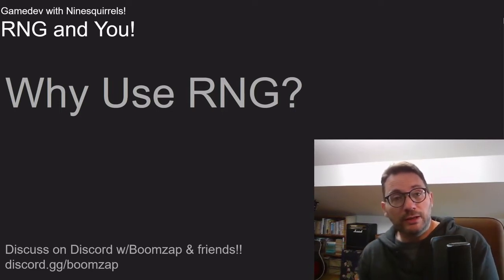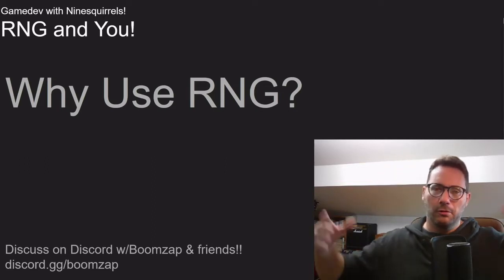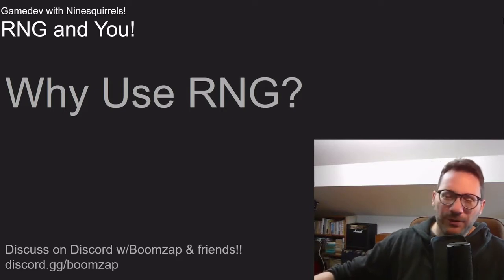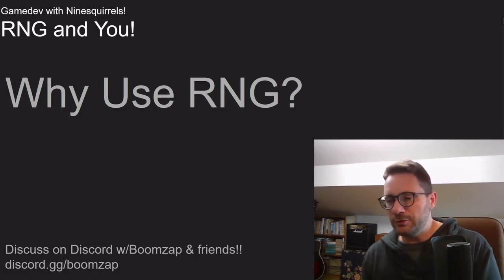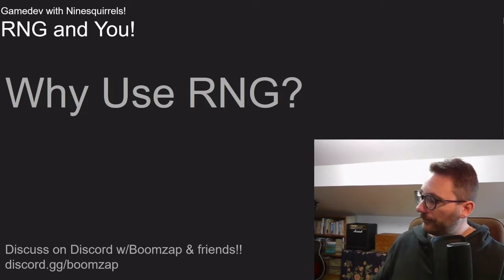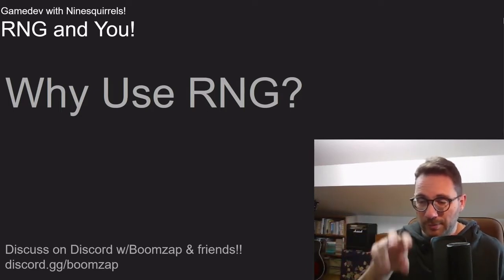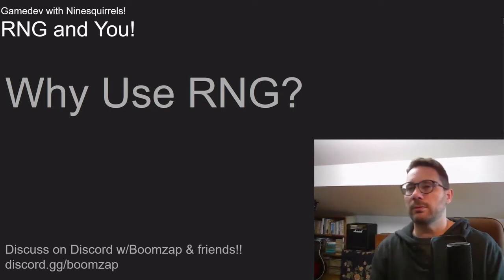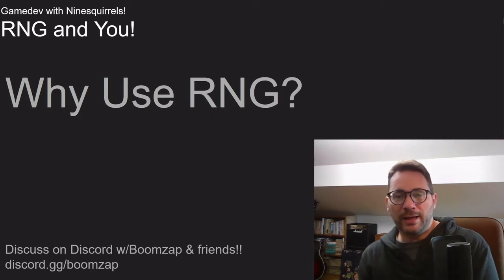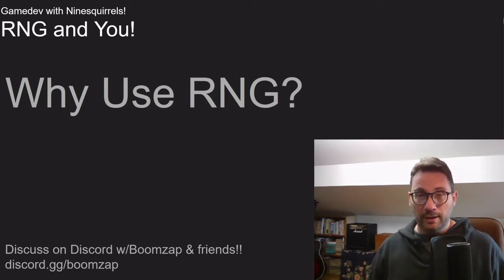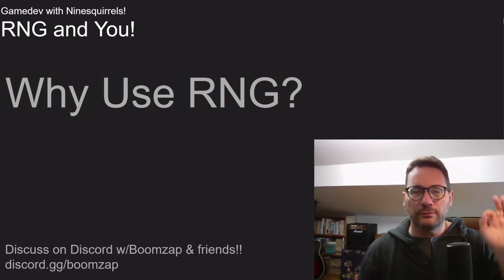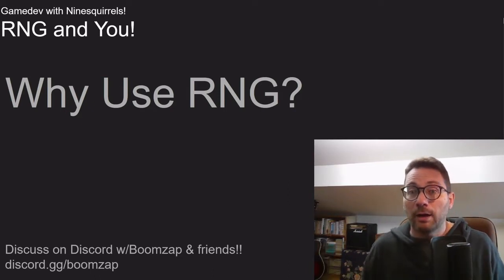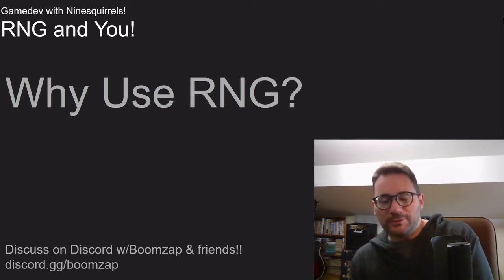One thing we don't talk about very much is sometimes you need to make your AI dumber. In first-person shooters, any programmer who's even basically started making one can make bots that you can't possibly beat. You getting your mouse, aiming on somebody, and shooting them in the head — that's a skill you have to master. Computers are really good at that. I can make a bot that makes every single headshot, 100% without fail, every time even one pixel of your head shows from behind a wall. And that's always not fun.